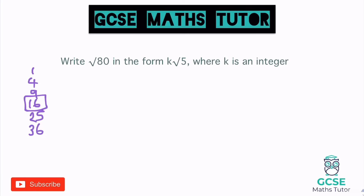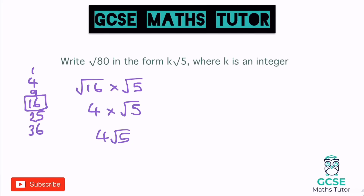16 goes into 80 five times. So I can write the square root of 80 as the square root of 16 times the square root of 5, just like we did before. The square root of 16 is the whole number 4, so it's 4 times the square root of 5. Getting rid of the times sign, we can say 4 root 5.